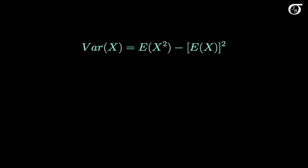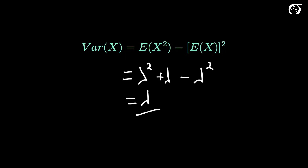We know the variance of x equals the expectation of x squared minus the square of the expectation of x. We found that the expectation of x squared is lambda squared plus lambda, and the expectation of x is lambda, so we subtract off lambda squared. We are left with lambda. So the variance of a Poisson random variable is equal to lambda, and we have shown that for a Poisson random variable, the mean and the variance are both equal to lambda.